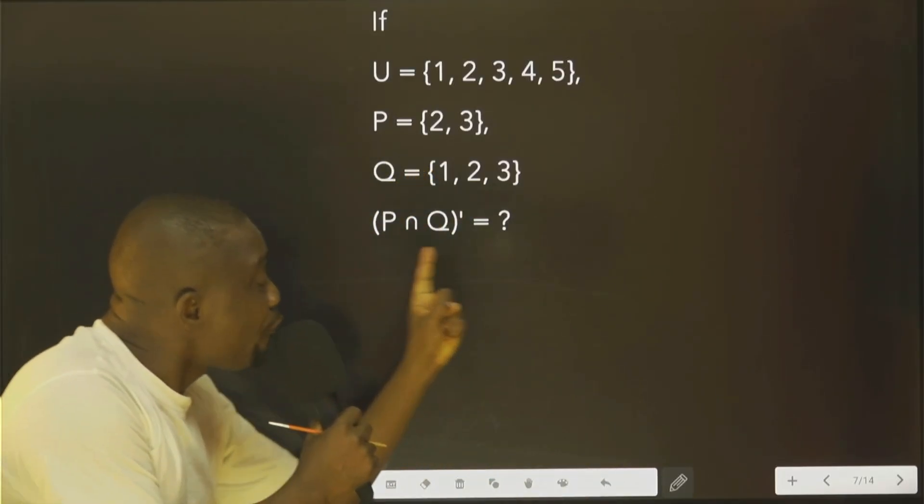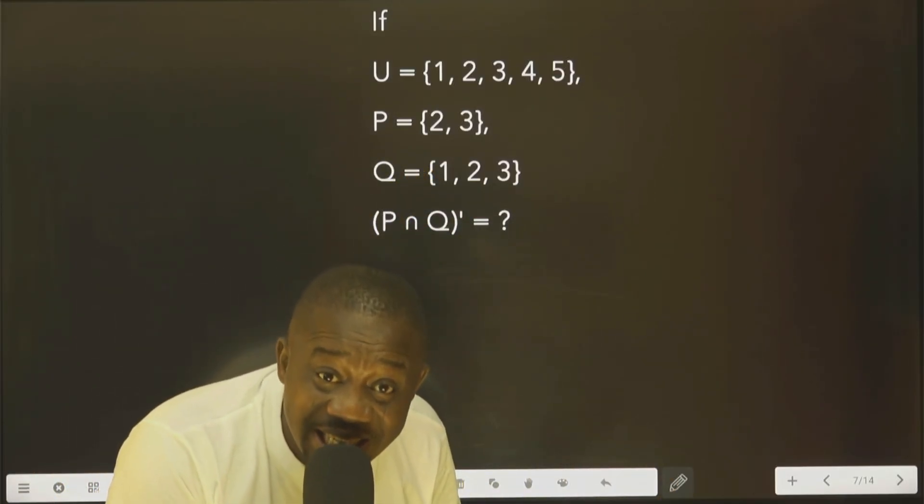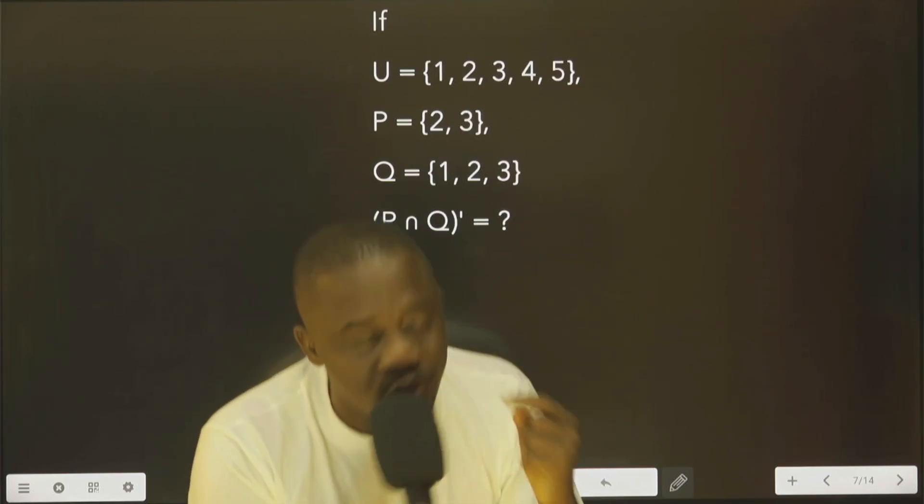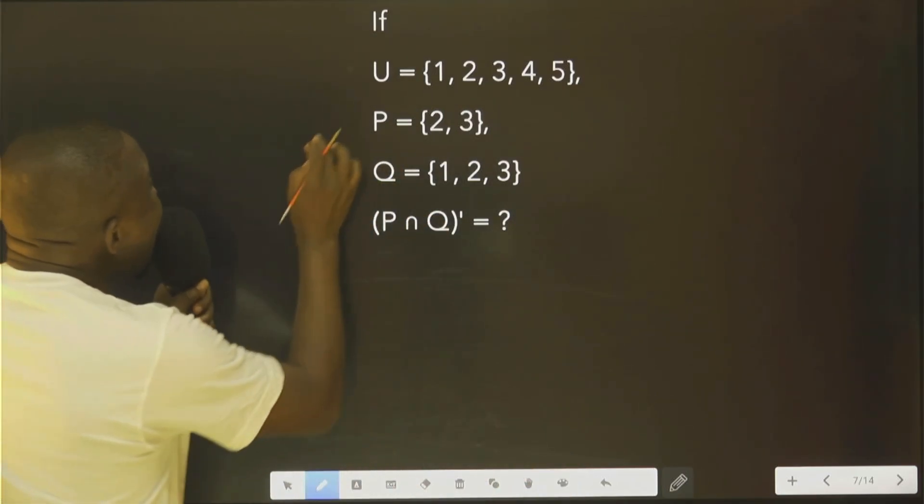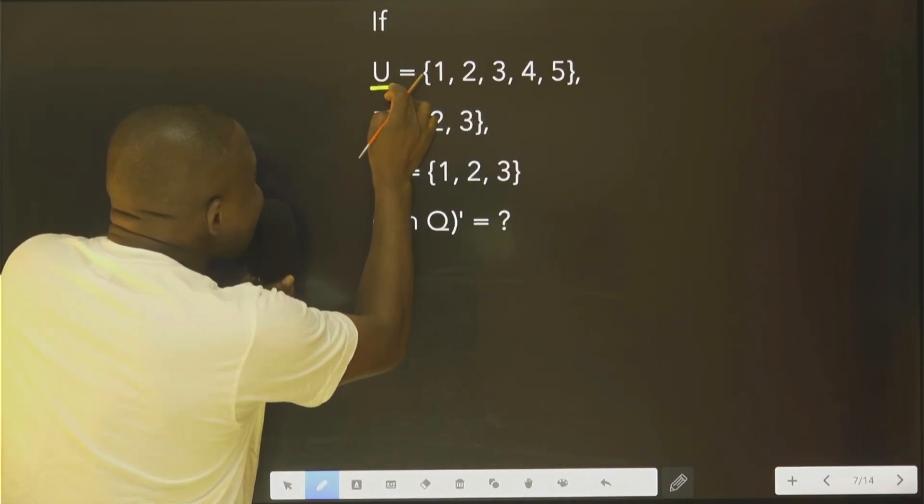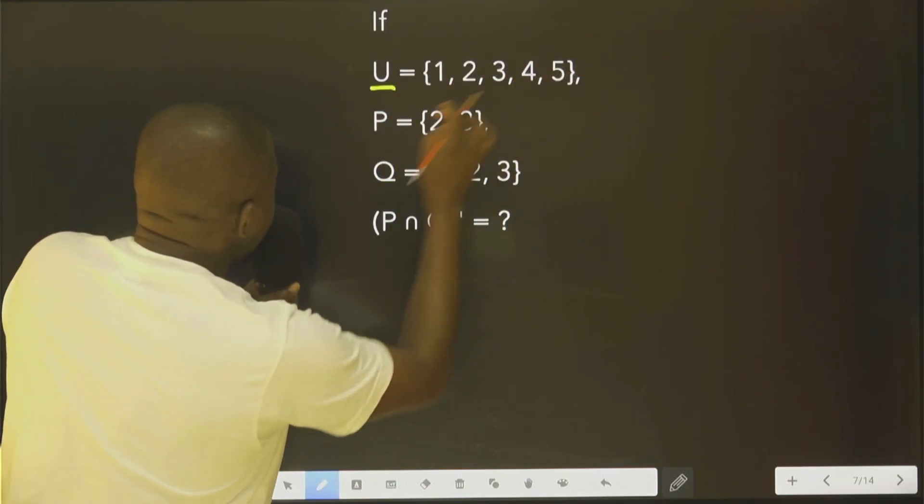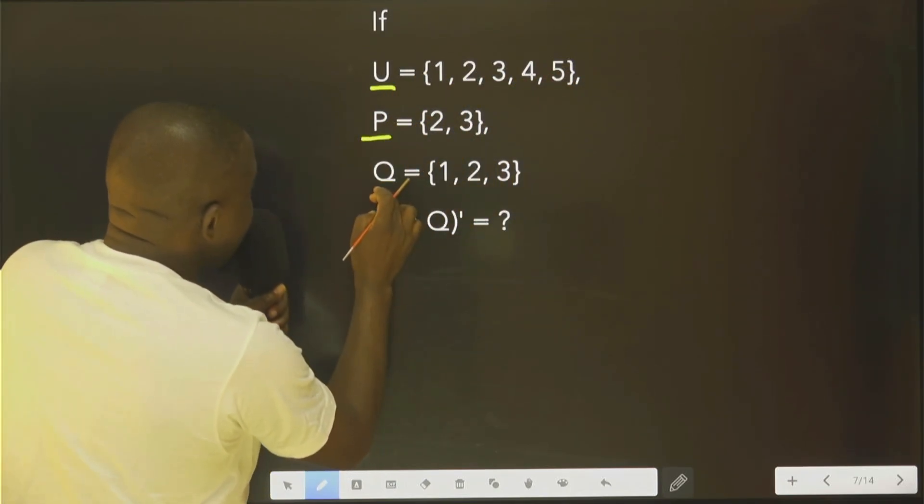Hello, do you know how to find the complement of any set? This question will assist you. Let's see it. If the universal set U = {1, 2, 3, 4, 5}, P = {2, 3}, Q = {1, 2, 3}, we